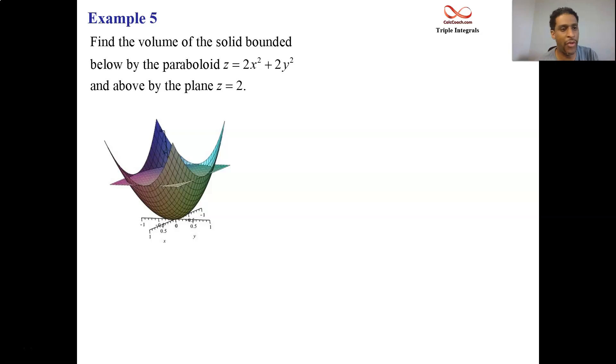First up, we have this example labeled example 5. We're asked to find the volume that's bounded below by the paraboloid 2x² + 2y² = z and bounded above by the plane z = 2.